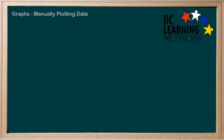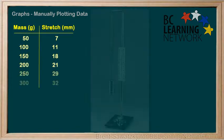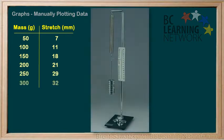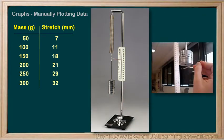Following the collection of data in an experiment, you typically present your outcome in graphical form. Let's do an example to ensure you know how to do this. We've collected data from a situation where we attached various masses to the end of a spring and measured the resulting stretch of the spring each time.